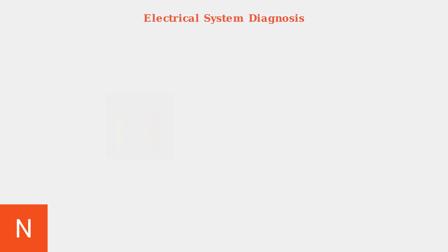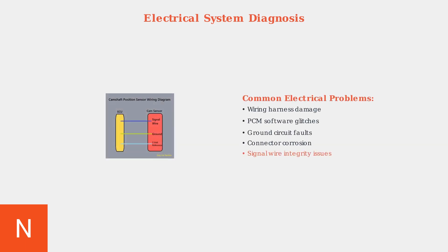Electrical issues account for 15% of P000A cases and include wiring harness problems, PCM software glitches, ground circuit faults, and connector corrosion. Proper diagnosis requires checking signal integrity and reference voltages.